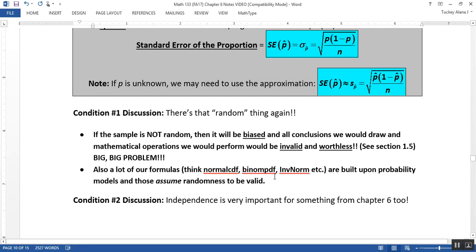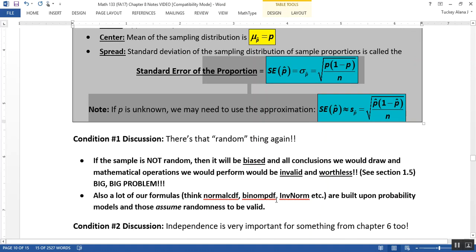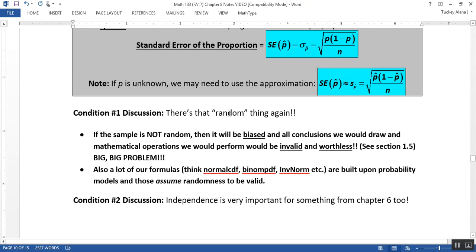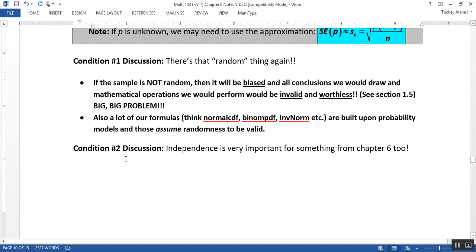Also, all of the normal CDF, binomial formulas - everything is built from binomial formulas from section 6.2. If you can't have random, then you can't use binomial, and these formulas would no longer hold true. So condition number one being random is really important, but it's such a big problem that we almost always assume we have it. Always in this course we will assume we have it.